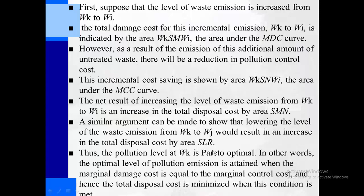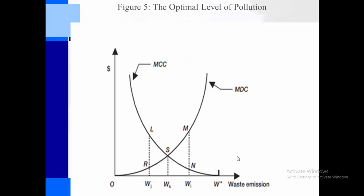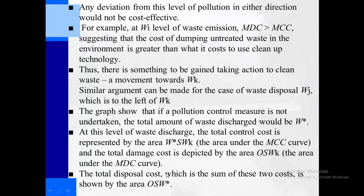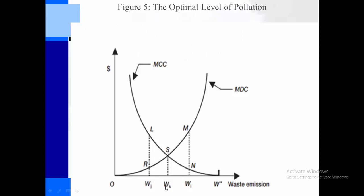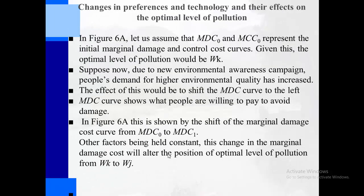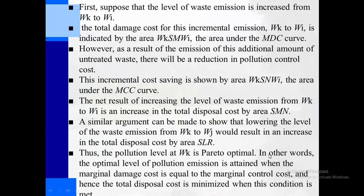Thus the pollution level at WK is confirmed as optimal. In other words, the optimal level of pollution emission is attained when the marginal damage cost equals the marginal control cost. The optimal level of pollution is achieved at point S when WK of waste is emitted, because here the marginal pollution control cost and marginal damage cost are equal. Hence, the total disposal cost is minimized when this condition is met.